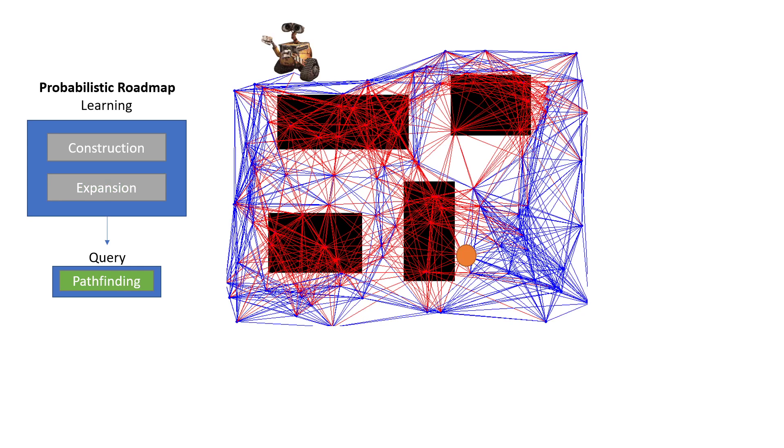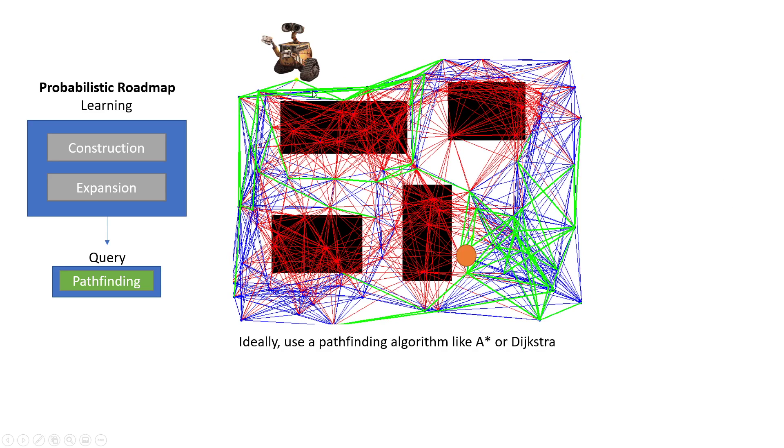For the query phase, this is where you would actually do your pathfinding. I have just simply added two more points, again connected them to the k nearest points. And then the way I have done it is that I simply brute forced a way through. So it just keeps checking in all directions until it finds a path that's valid.